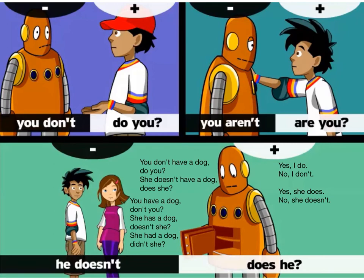So these would be the correct sentences. Answers: 'You have a dog, don't you?' → 'Yes, I do' or 'No, I don't.' 'She has a dog, doesn't she?' → 'Yes, she does' or 'No, she doesn't.' 'She had a dog, didn't she?' → 'Yes, she did' or 'No, she didn't.' Remember, these are the most difficult sentences because they change a lot from affirmative to negative — that's why I'm making more emphasis on them. The others are easier because we can see the same auxiliary from one part to the other.